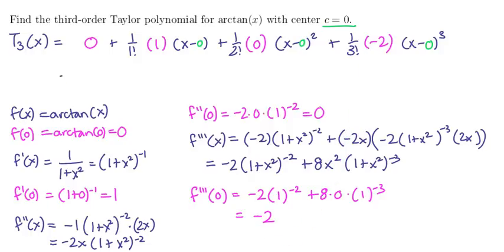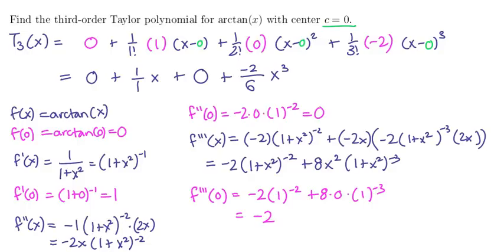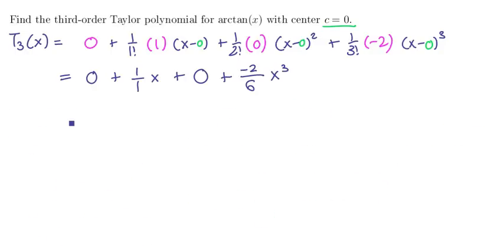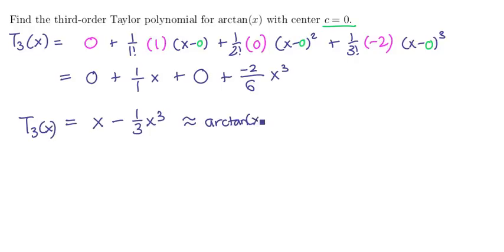So now we have the coefficients. Let's clean this up. We have 0 plus 1 over 1 times x plus 0 plus negative 2 over 6, that's 3 factorial, times x cubed. Ignoring the zeros, that simplifies to x minus 1 third x cubed. That's our third order Taylor polynomial, and it's an approximation of the function arctangent of x. And that's our answer.